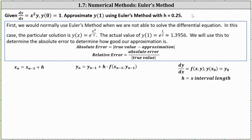To use Euler's method, we assume the differential equation is in the form dy/dx equals f of x comma y. The initial condition is y of x sub 0 equals y sub 0. h is the x interval length, x sub n equals x sub n minus 1 plus h, and y sub n equals y sub n minus 1 plus h times f of x sub n minus 1 comma y sub n minus 1.